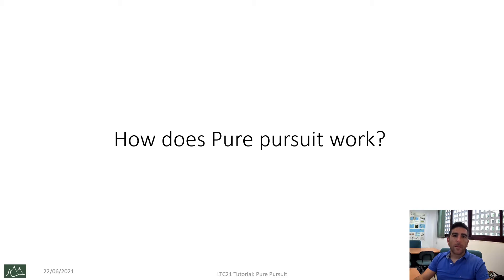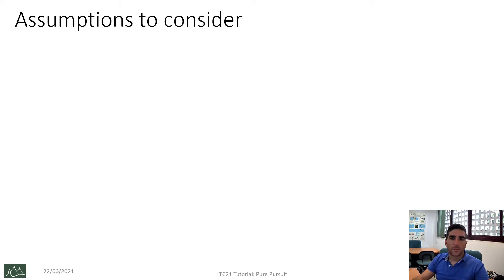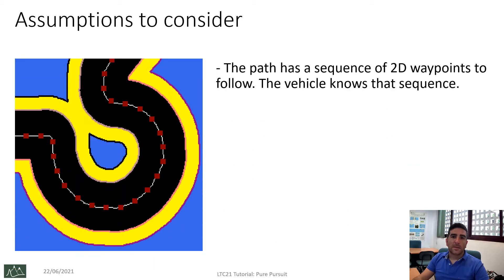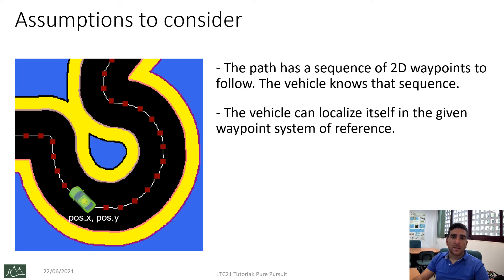Okay, but how does it work? Let's start by mentioning the assumptions to consider. The path is a sequence of 2D waypoints that the car must follow, so the vehicle knows that sequence of waypoints. The car can localize itself in the waypoint system of reference. And finally, the main goal is to follow these waypoints in the look-ahead direction.